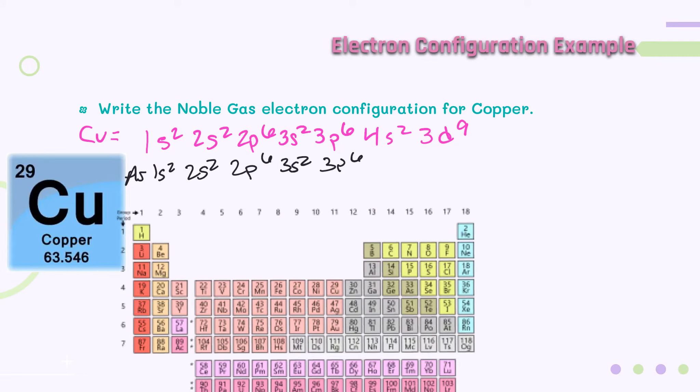So another example would be write the noble gas configuration for copper. So copper's actual noble gas configuration, or the longhand noble gas configuration is 1s2, 2s2, 2p6, 3s2, 3p6, 4s2, 3d9. It gets really long once you start getting into elements that are down here. It gets really tiresome to have to write out all of those different letters and exponents and numbers.